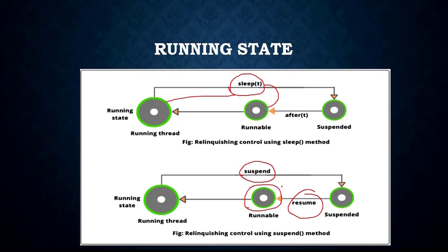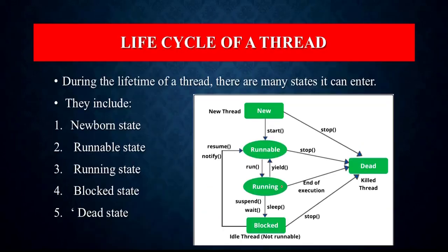The fourth state is the Blocked state. A thread is considered to be in the Blocked state when it is suspended, sleeping, or waiting for some time in order to satisfy some condition. When a thread is in the Blocked state, it can be there for the following reasons: the thread has gone into sleep mode, the thread has been suspended, or the thread is in the wait state. These are all instances where a thread can go into the Blocked state.